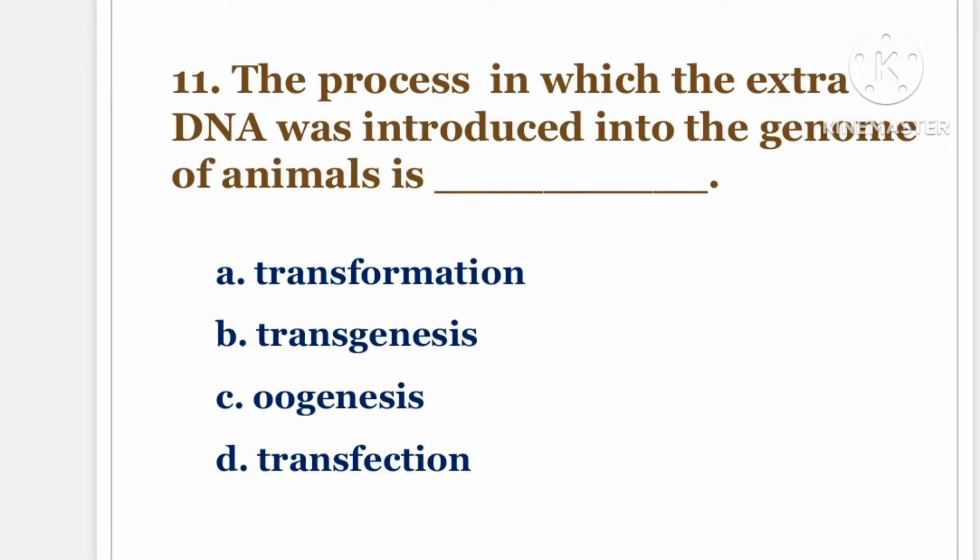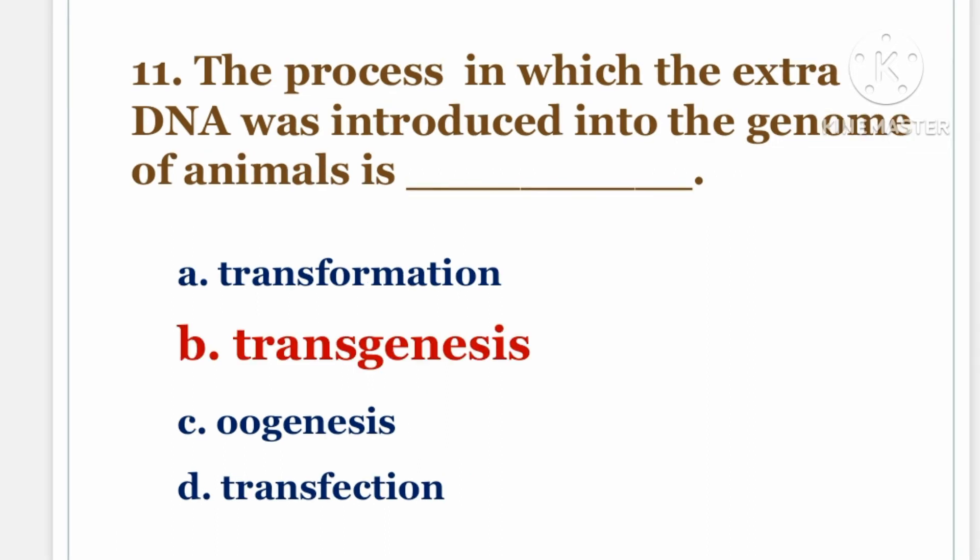Next question. The process in which the extra DNA was introduced into the genome of animals is DASH. The options are A. transformation, B. transgenesis, C. oogenesis, D. transfection. And the answer is transgenesis.